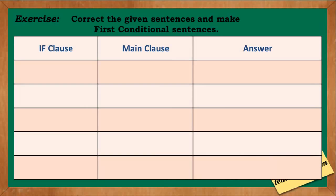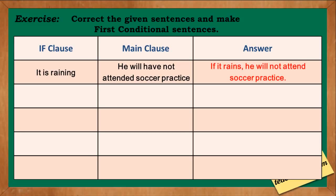For our exercise, correct the given sentences and make first conditional sentences. IF clause: 'It is raining.' Main clause: 'He will not have attended soccer practice.' The answer is: 'If it rains, he will not attend soccer practice.' The IF clause 'it is raining' is in the present progressive tense — change it to present simple: 'if it rains.' The main clause 'he will not have attended' is in the future perfect — change it to future simple: 'he will not attend soccer practice.'